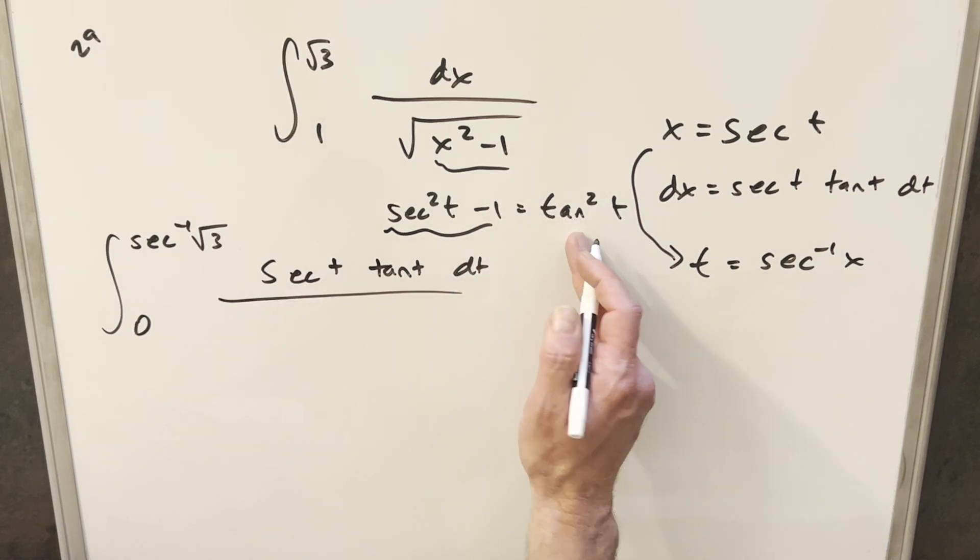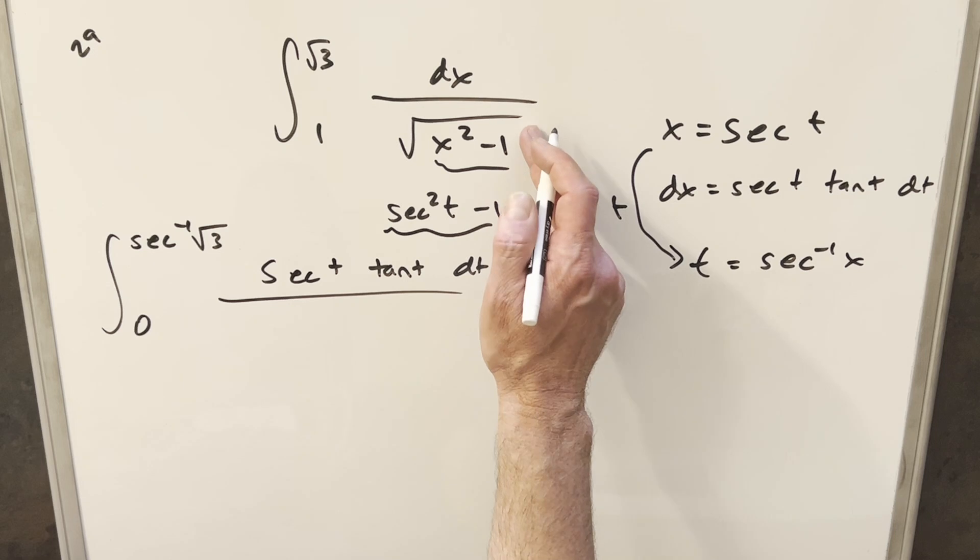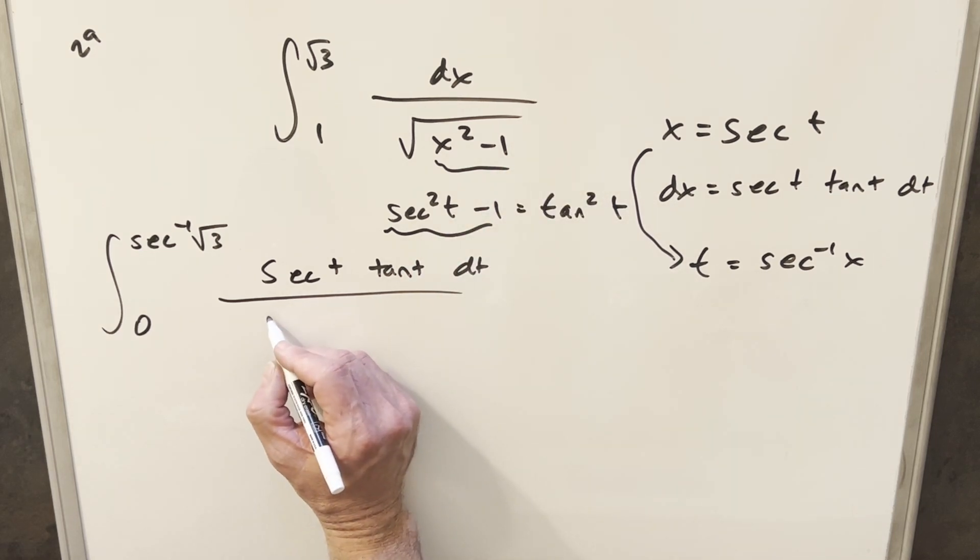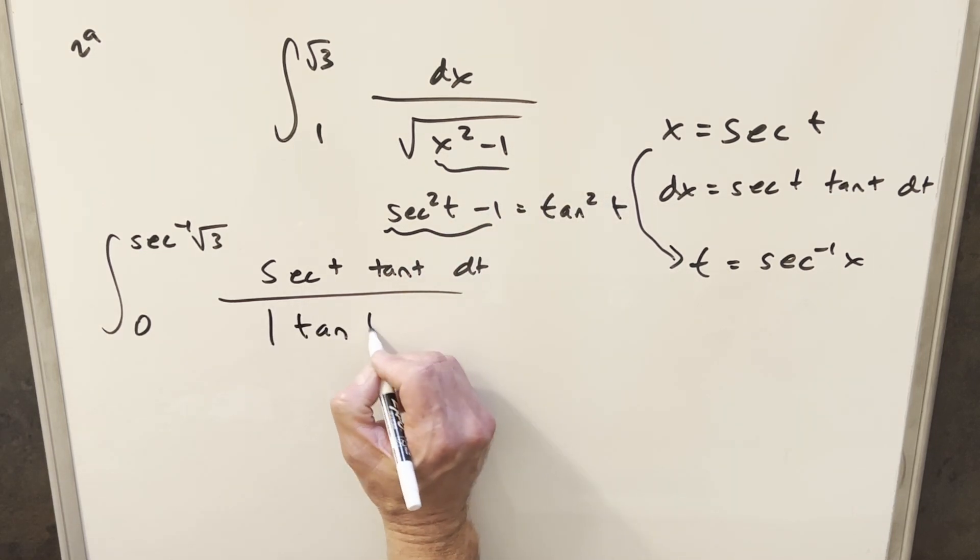this is going to become, everything inside the radical is going to become tan squared t inside the square root. So when we take the square root of that, that's just going to give me absolute value tan of t.